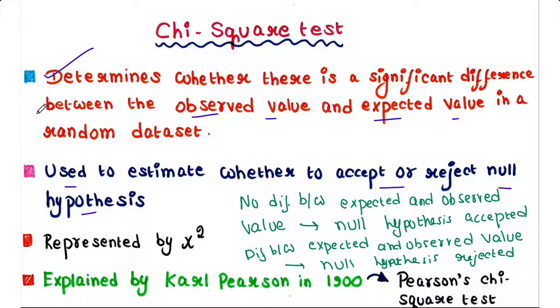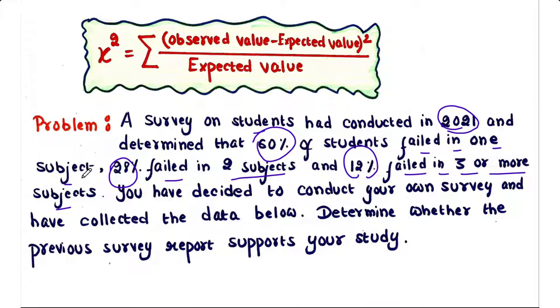The chi-square test is represented by χ². This test was explained by Karl Pearson in 1900, hence this test is also referred as Pearson's chi-square test. The formula for chi-square can be written as χ² = Σ(observed value - expected value)² / expected value.